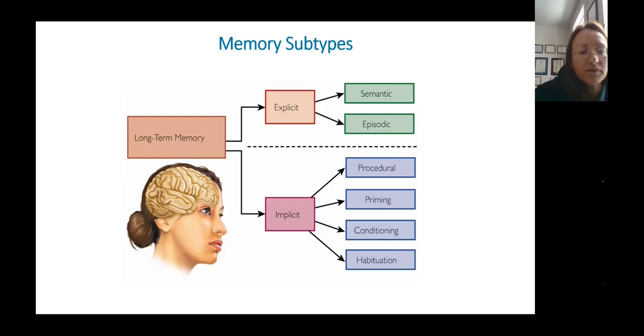Your long-term memory is divided into your explicit memory and your implicit memory. Your explicit memory includes your semantic and your episodic memory. Explicit memory is also known as declarative memory. You can tell me about these memories in words. Semantic memory refers to your knowledge of facts. And episodic memory is your memory for things that you've experienced.